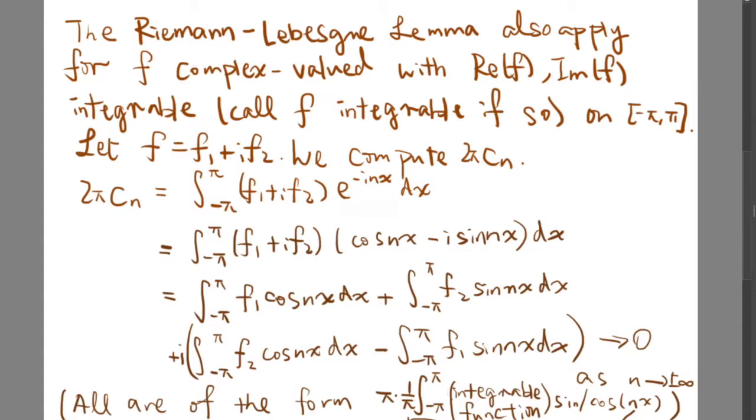Let f be a complex-valued function with the real part and imaginary part integrable, and we call f integrable if it is so. Define such a function on the closed interval negative pi to pi, and let f equal f1 plus i f2. We are going to compute 2π cn.